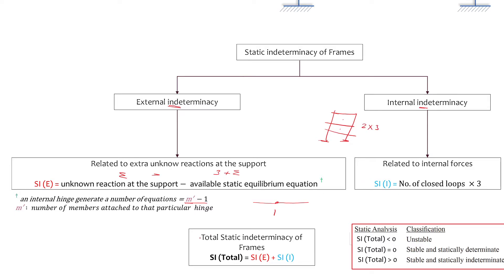The total indeterminacy for a frame is the external plus internal. If it's less than 0, it's unstable; equal to 0, it's stable and statically determinate; and if it's greater than 0, it's stable and statically indeterminate to that positive number degree.